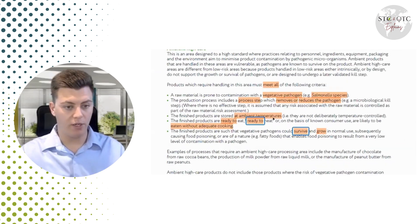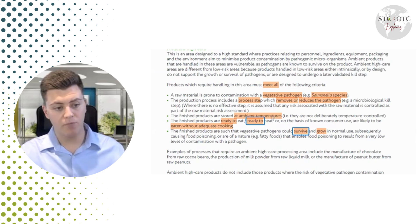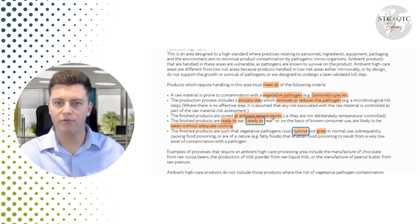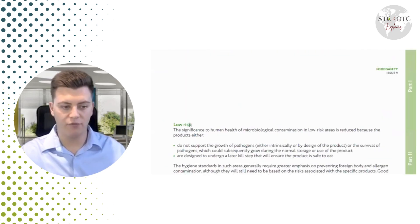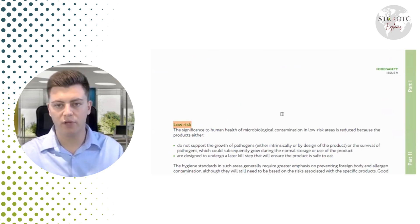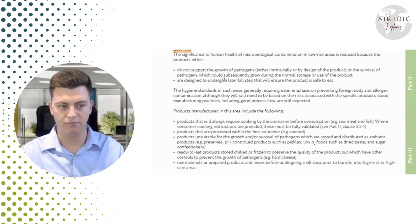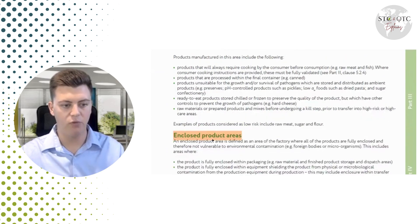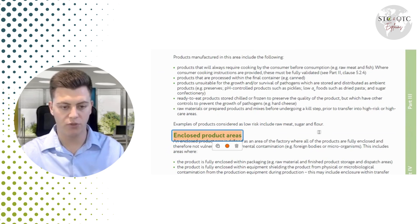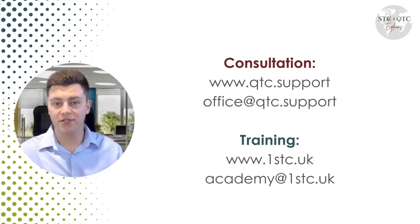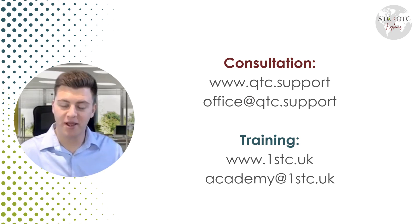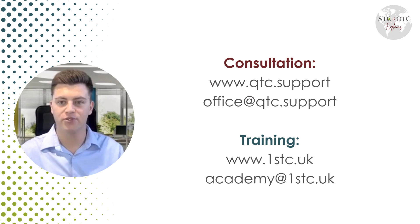That's pretty much everything about the production risk zones. We focused on high risk, high care, and ambient high care. We also have the low risk area, which is very common and where a lot of manufacturers pack, and enclosed product areas, which are fairly self-explanatory and won't be defined in this video. Don't forget to like, comment, and subscribe to our channel for more videos on food safety topics. Thank you and bye.